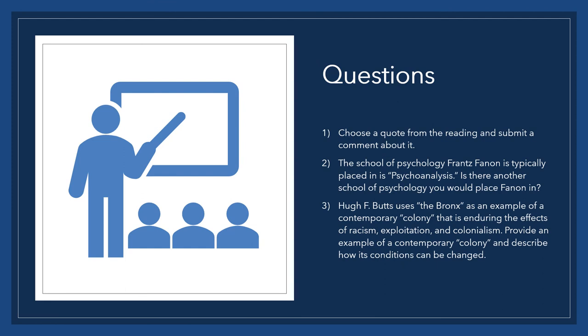This is the end of my presentation, so I have a few questions for you guys. The first thing you guys can do if you want is choose a quote from the reading and submit a comment about it. I know this is what we usually do, so I wanted to give you guys the option to do that. The second question I have for you guys is the school of psychology Frantz Fanon is typically placed in is psychoanalysis. Is there another school of psychology you would place Fanon into and why? The third question is Hugh F. Butts uses the Bronx as an example of a contemporary colony that is enduring the effects of racism, exploitation, and colonialism. Provide an example of a contemporary colony and describe how its conditions can be changed.